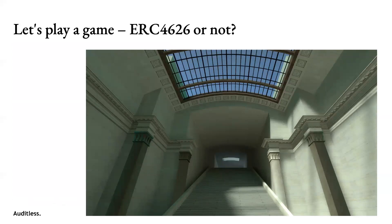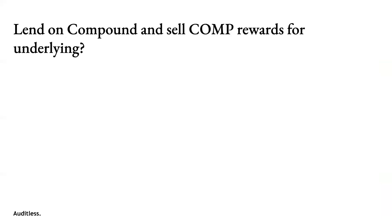Let's play a quick game to make sure we understand ERC-4626. I'll give you an example use case and you'll tell me if it's expressible with ERC-4626. First one: we create a vault where we lend DAI on Compound, and then sell any COMP rewards for more DAI and reinvest in the vault. Raise your hand if you think that can be implemented as an ERC-4626 vault.